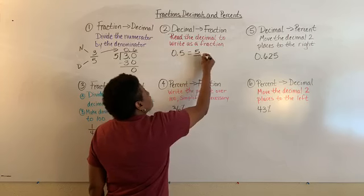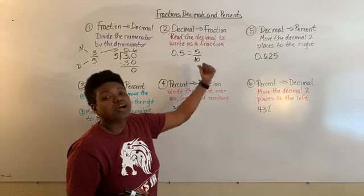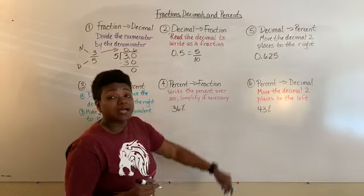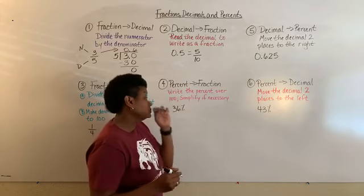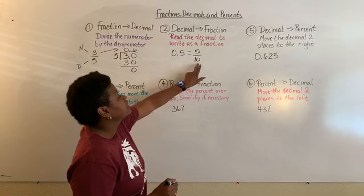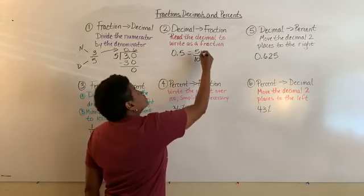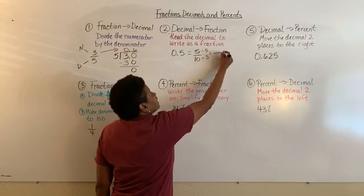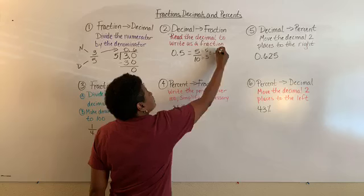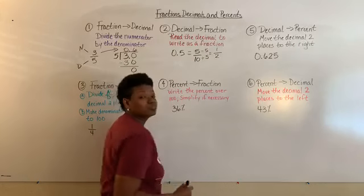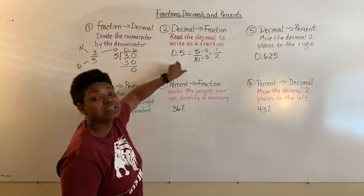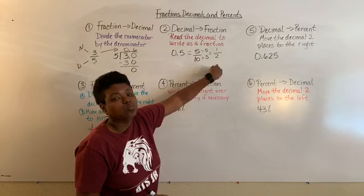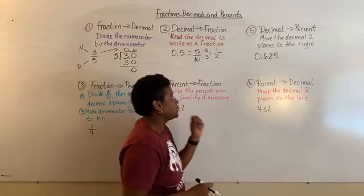...tenths. So I have five-tenths, but I can simplify. The factors of five are one and five, and five can go into ten, so I simplify both five and ten by five. The fraction is now simplified to one-half. So 0.5, read as five-tenths, simplifies to one-half.